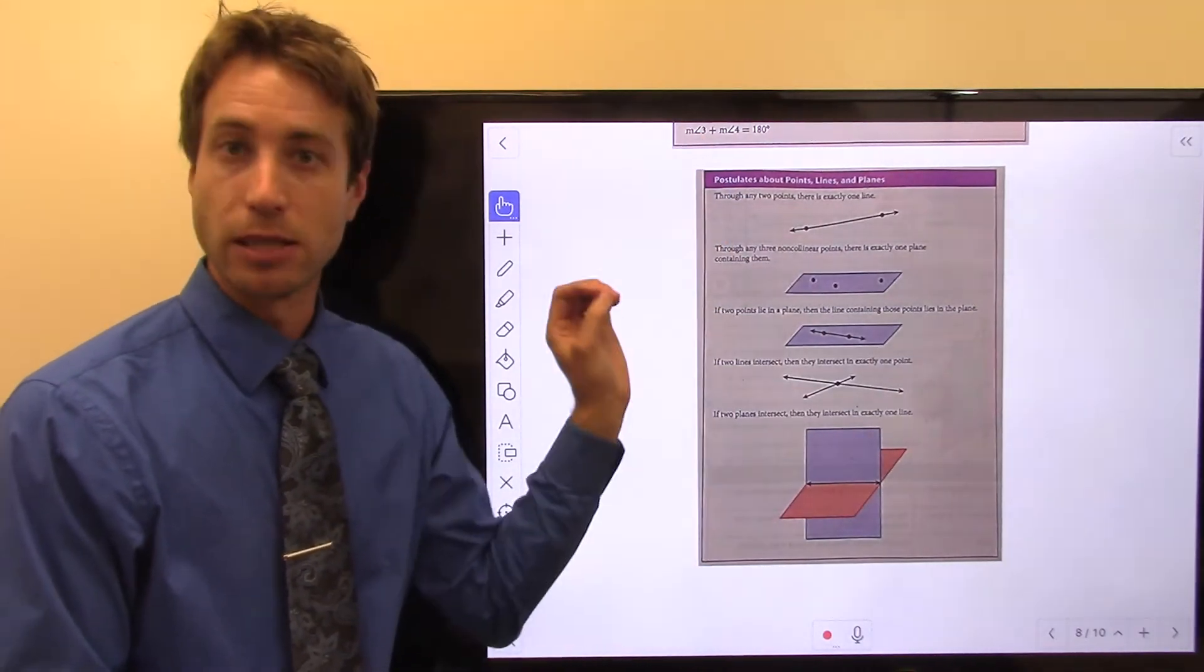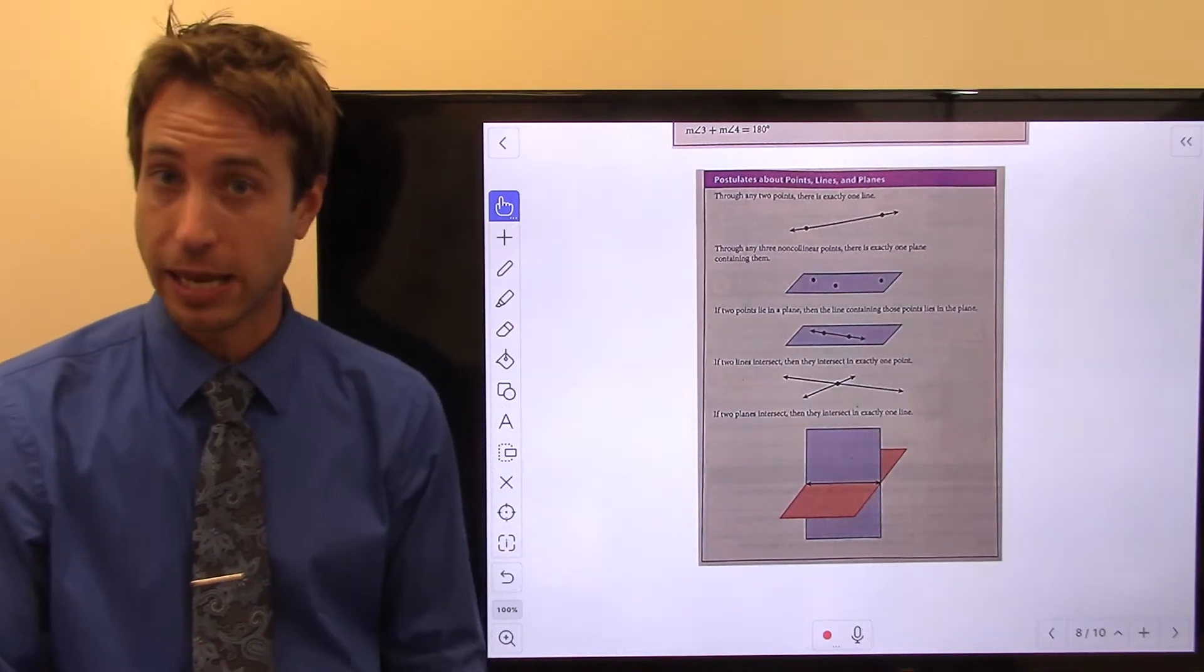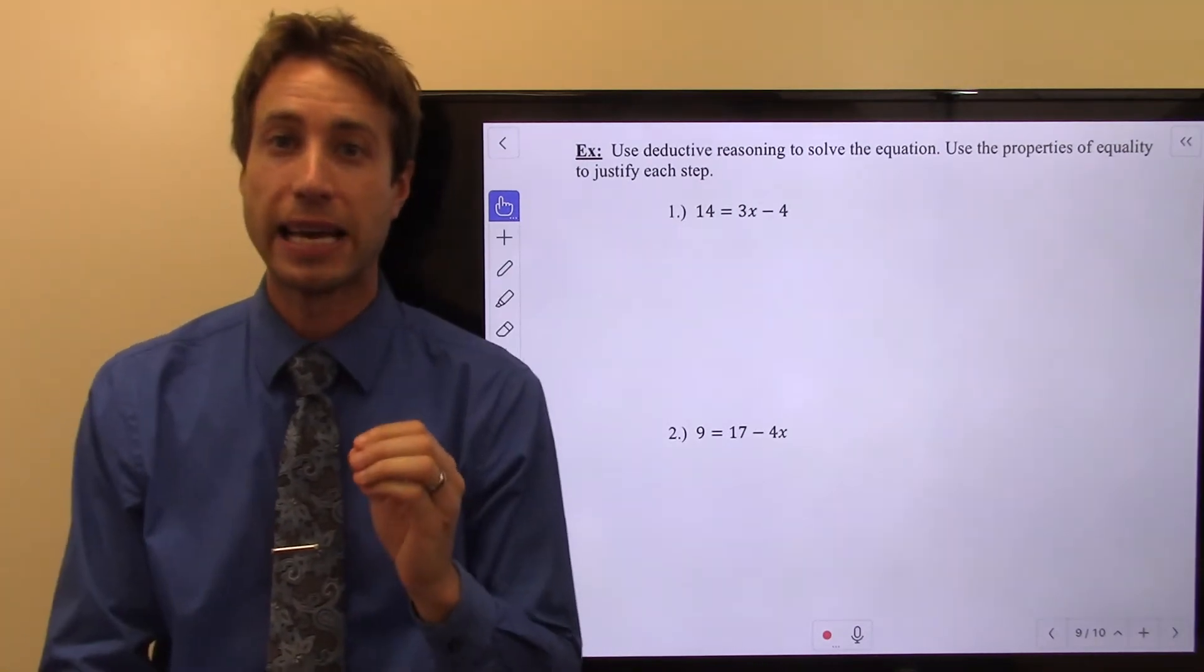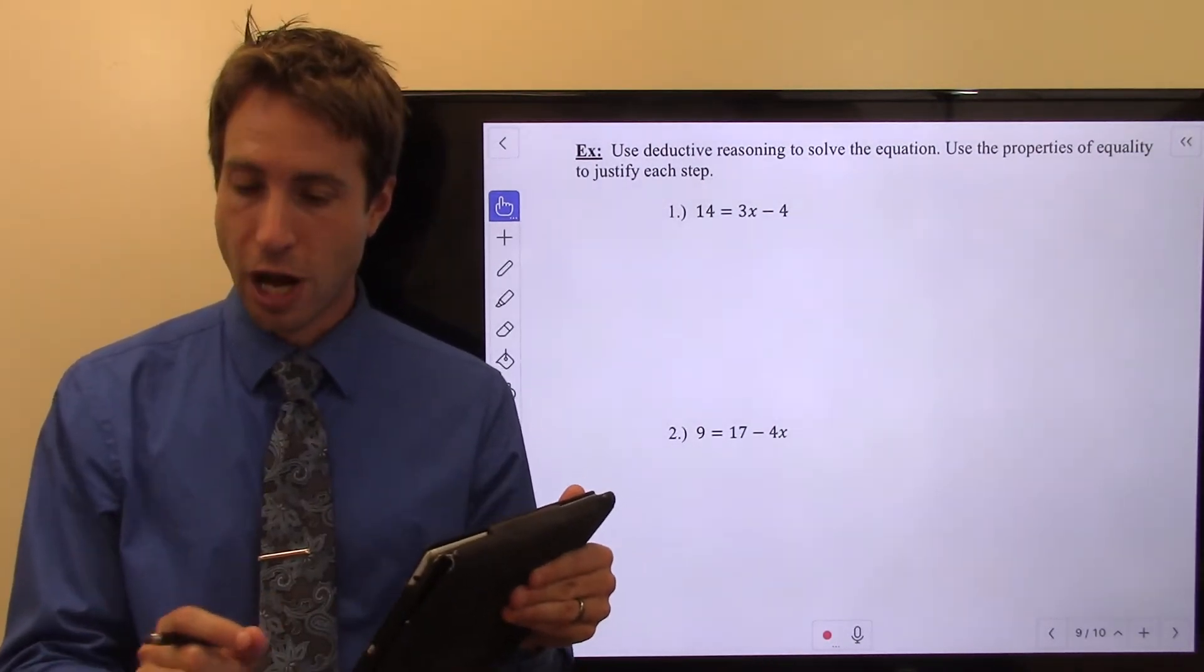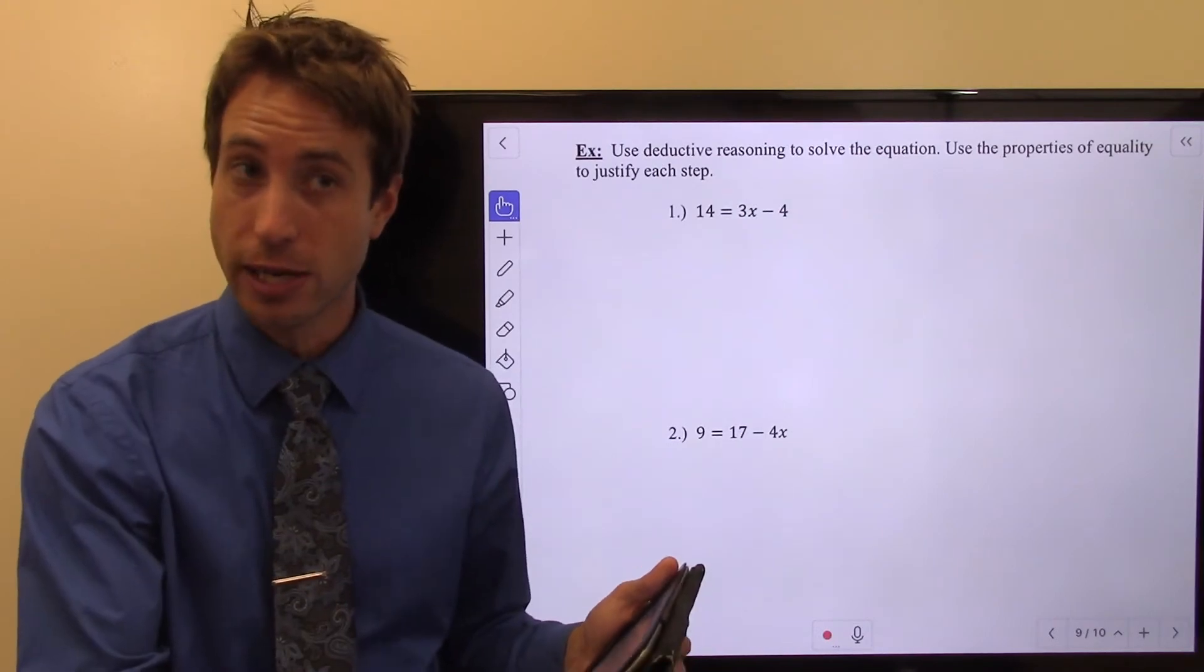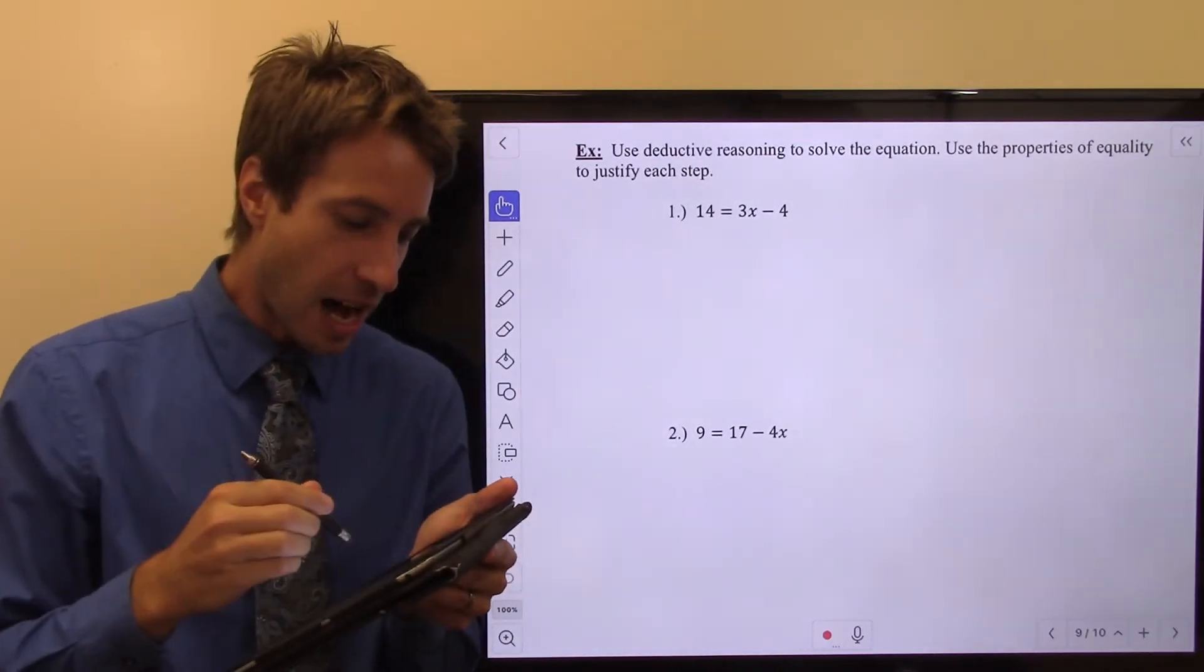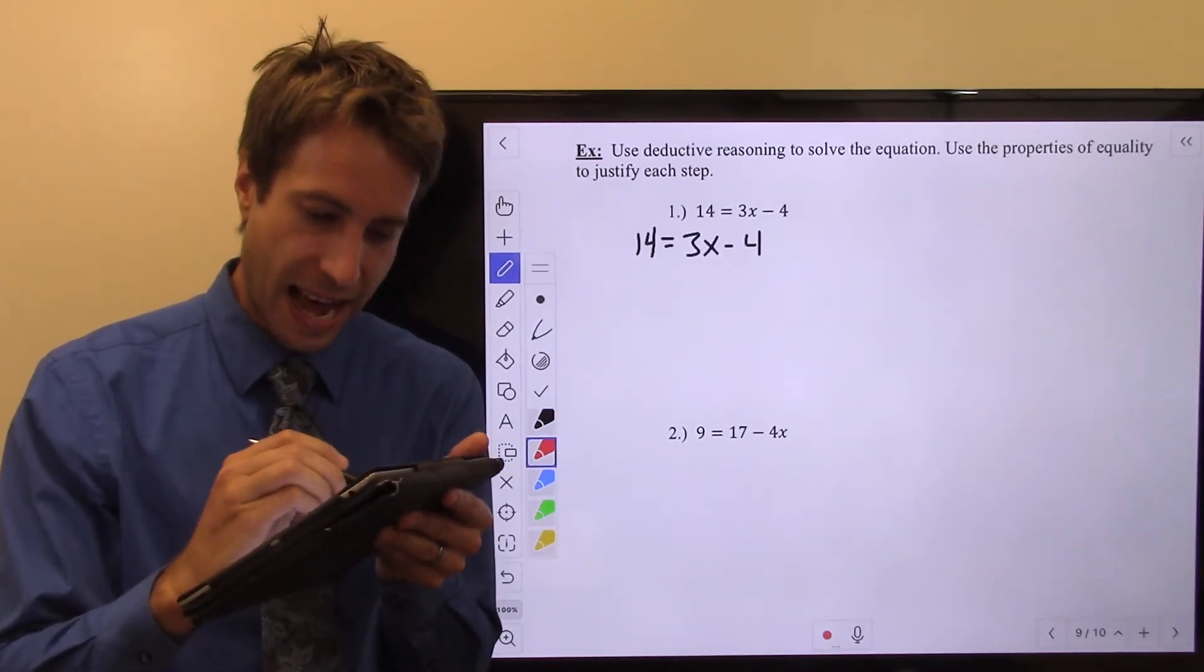There's only one unique line that goes through two points. So all of these are really sort of common sense postulates, right? Things that do not need to be proven, but we can use these as justifications for steps in a proof. So here we go. Up first, I want you to use deductive reasoning to solve the equation. We're going to use properties of equality to justify each step. Again, why is it deductive reasoning? Remember, deductive reasoning is based on facts that are known to be true. So as long as I justify each step with something I know to be true, when I get to the conclusion, the conclusion must be true.